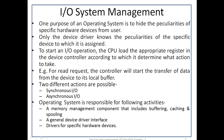One purpose of an operating system is to hide the peculiarities of specific hardware devices from the user. Only the device driver knows the peculiarities of the specific device to which it is assigned. To start an I/O operation, the CPU loads the appropriate registers within the device controller. The device controller then determines what action to take — for example, for a read request, the controller will start the transfer of data from the device to its local buffer.